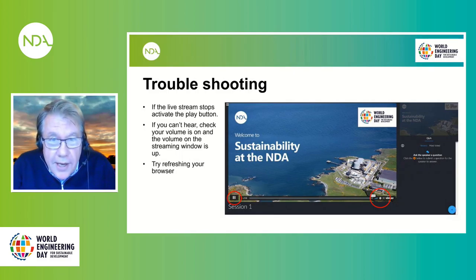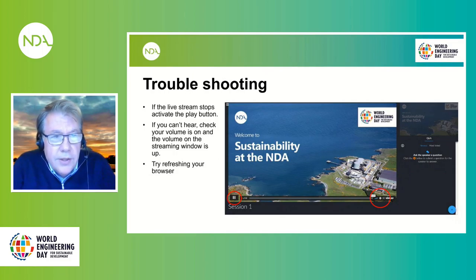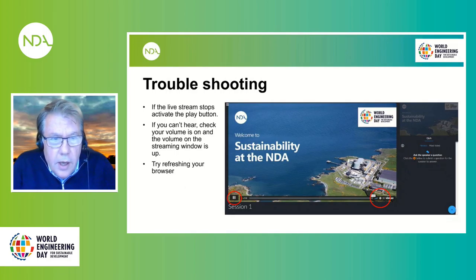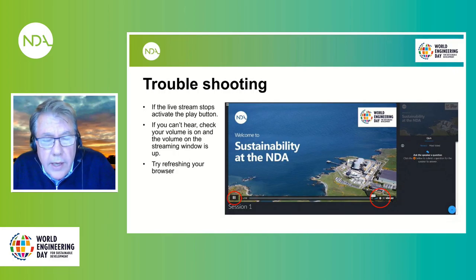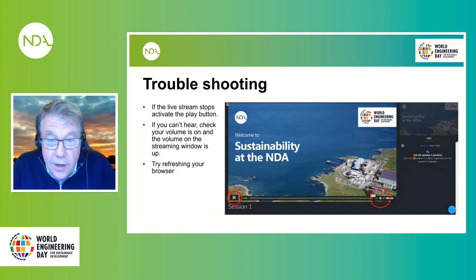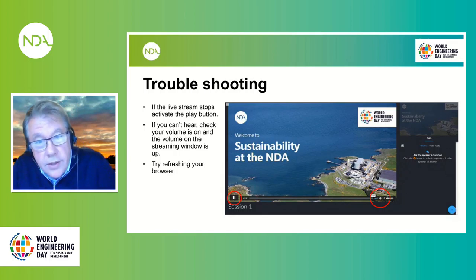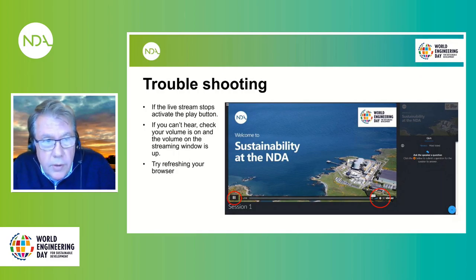Troubleshooting: if you do have any internet connection problems and drop out, there are one or two things you can do. If the live stream stops, just press the activate button on the left-hand side. If you can't hear, check that your volume is on and also check the volume in the live streaming window to the right next to the cog - you'll see blue lines there, that's your volume control.